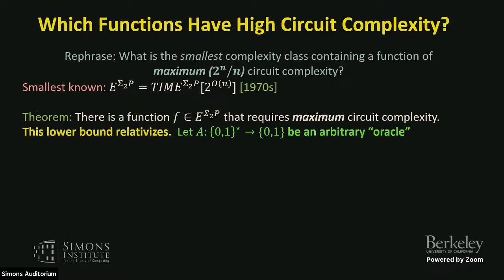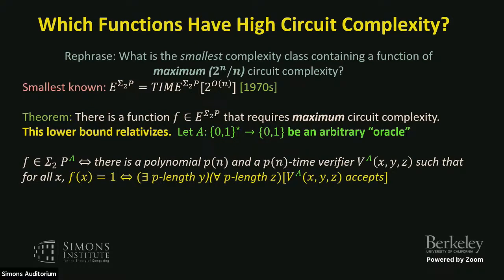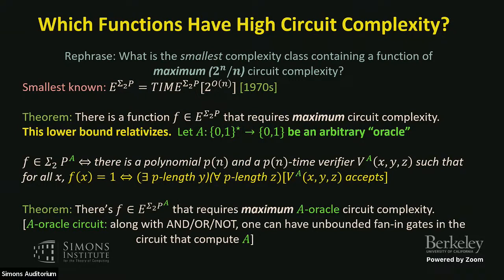This lower bound relativizes. Let A be some arbitrary oracle — an arbitrary decision problem we can plug in. We have Sigma_2^P with oracle A, and there's a function in E^{Sigma_2^A} that requires maximum A-oracle circuit complexity. An A-oracle circuit has AND and OR gates plus A-gates that compute A on any number of inputs. The previous argument still goes through with A-oracle circuit evaluation.